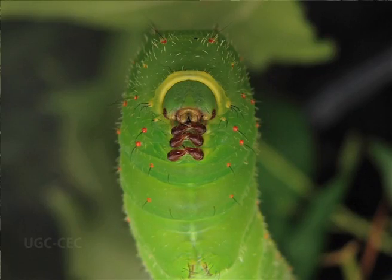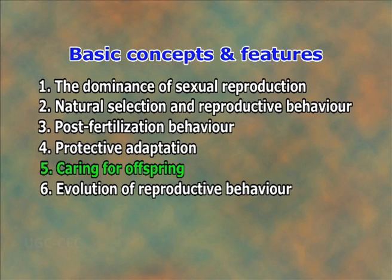When disturbed, many insect larvae, especially those that are camouflaged, give a so-called startle display. Several caterpillars, for example, raise their heads as if to bite, or their hinder parts in the manner of a wasp as if to sting. Others suddenly present striking color patterns previously hidden. Most of these displays have been shown experimentally to be effective deterrents against predators.